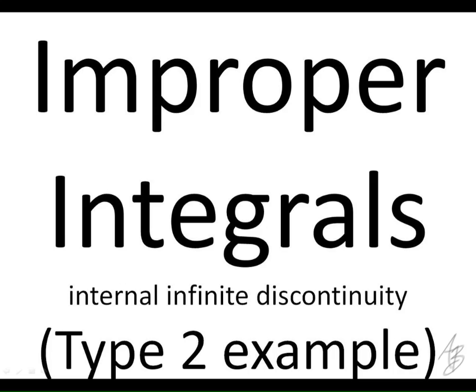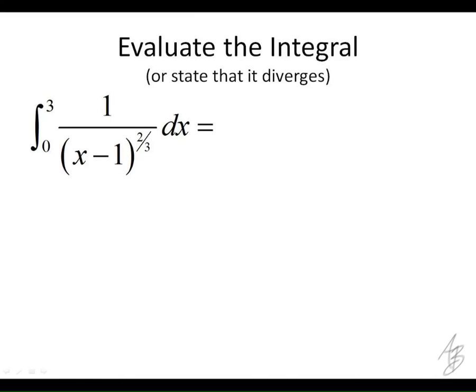So internal meaning that the vertical asymptote is going to be somewhere within the interval. Again, this looks like a somewhat normal integral, but we're going to have a problem where...